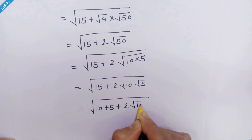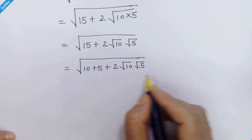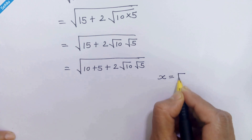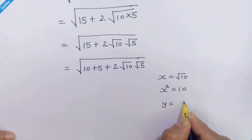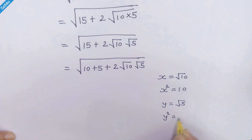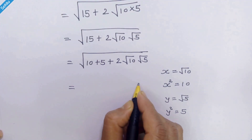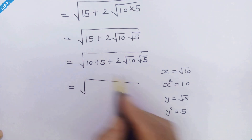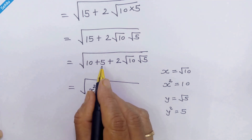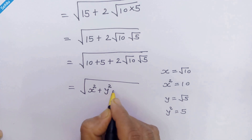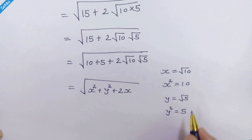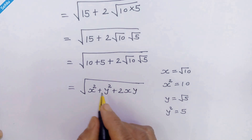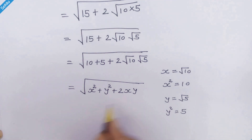So we have square root of (10 + 5) plus 2 times square root of 10 times square root of 5. Now let's take x equal to square root of 10, so x squared equals 10, and y equal to square root of 5, so y squared equals 5. Replacing values: square root of x squared plus y squared plus 2 times x times y.